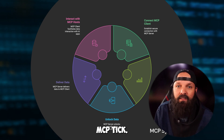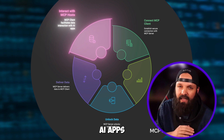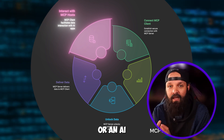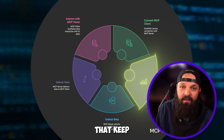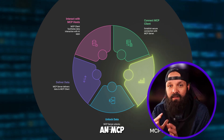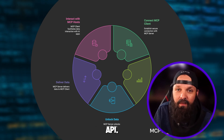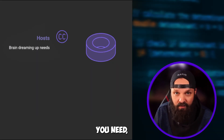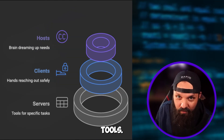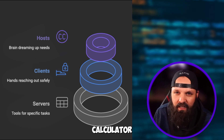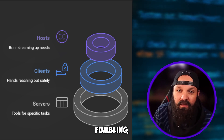Let's pop the hood and see what makes MCP tick. It's got a client-server setup that's honestly pretty clever. You've got MCP hosts — the AI apps you're chatting with, like a desktop version of Claude or an AI-powered coding tool — they're the ones hungry for data. Then there are MCP clients, the go-betweens that keep everything secure and connected. Each client links up with an MCP server, a little program that unlocks specific stuff like your files, a database, or an API. The host is your brain dreaming up what you need, the client's your hands reaching out safely, and the servers are the tools — hammers, screwdrivers, or even a trusty calculator.